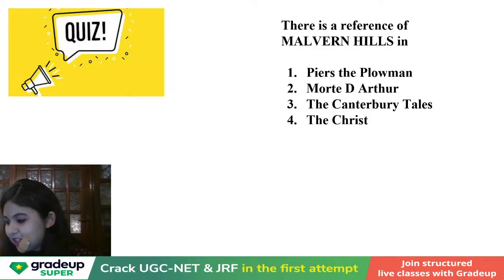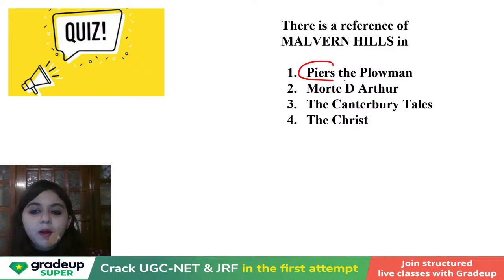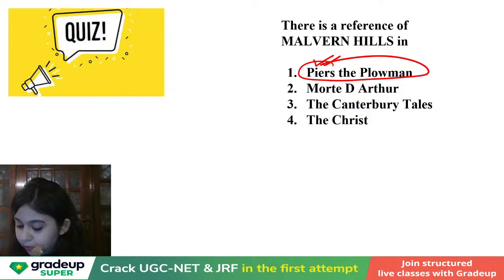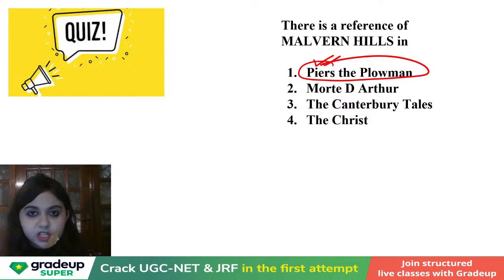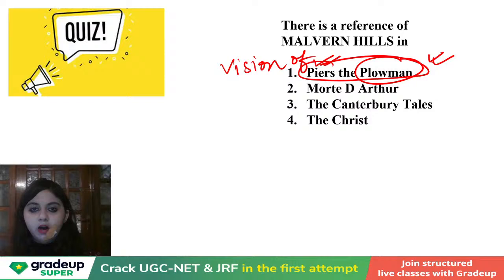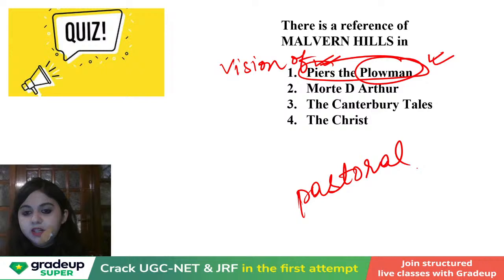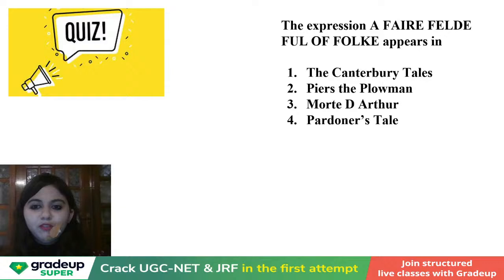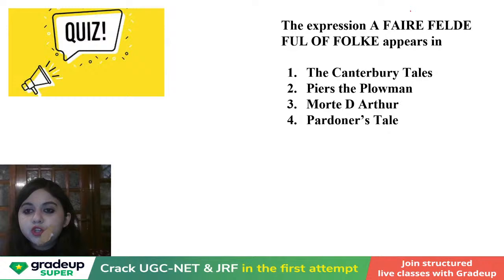We've got the correct answer. Saima and Swati Jha are absolutely right. When we talk about Malvern Hills, it is Piers the Plowman — the full title is The Vision of Piers the Plowman by Langland. We discussed how Langland and Gower are the two important contemporaries of Chaucer. Plowman, of course, is talking about the working classes, the farmers. Please remember, during this period the pastoral tradition is also coming — the eclogues are coming today. Malvern Hills is in Piers the Plowman.